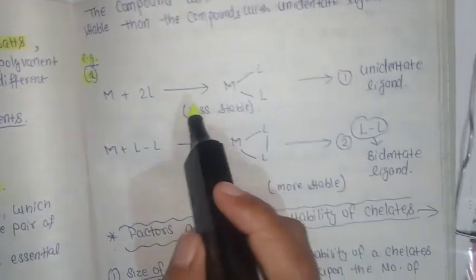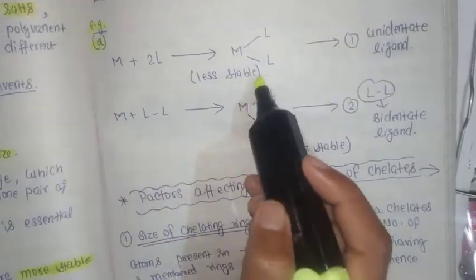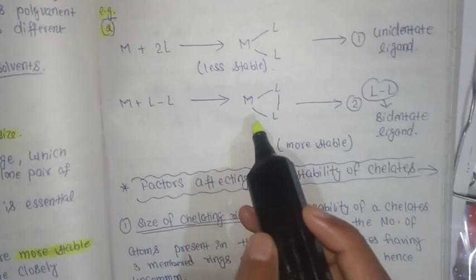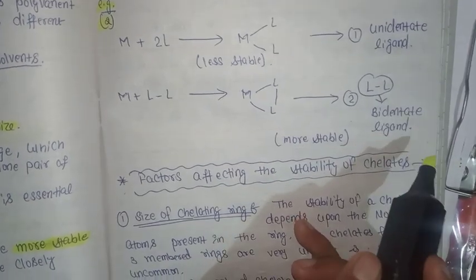Example second: this is less stable because this is unidentate ligand and this one is most stable because it is bidentate ligand.